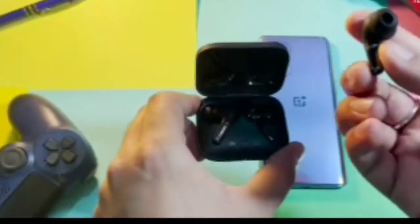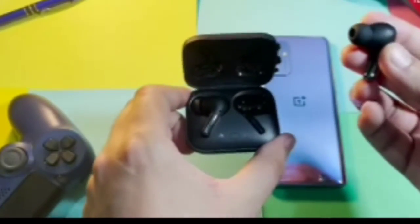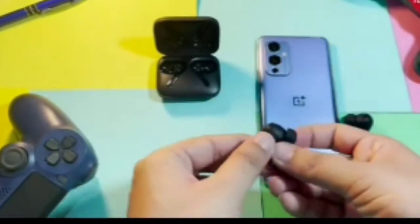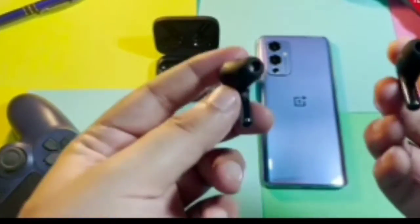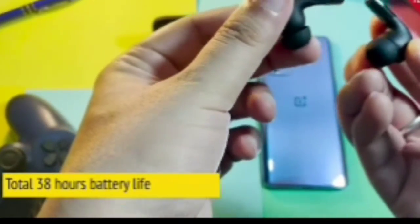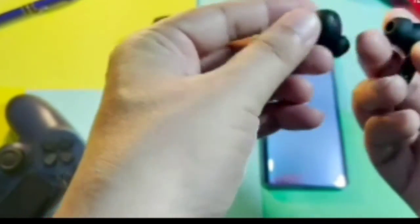Lastly, you get about 38 hours of battery life on a single charge on the OnePlus Buds Pro. The earbuds itself can deliver a battery life of about 10 hours. So with the charging case, you can get about 38 hours of music playback.